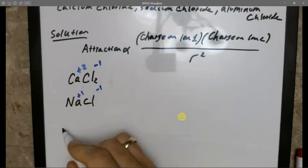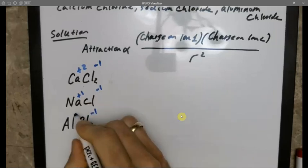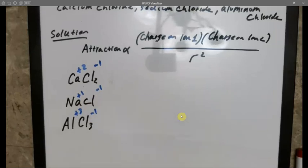If I look further at the other two, I have NaCl for sodium chloride, and this is plus 1 and this is minus 1. And lastly I have aluminum chloride, AlCl3. Chlorine is minus 1 and aluminum is plus 3.